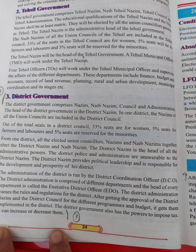In the last paragraph, there are the duties of the district government. Number one: frame rules and regulations for the district. Number two: implement different programs in the district with the approval of Nassim and council. Number three: impose taxes. In summary, the administration of the district is run by the DCO and EDO, and the EDO is the head of every department in the district government.